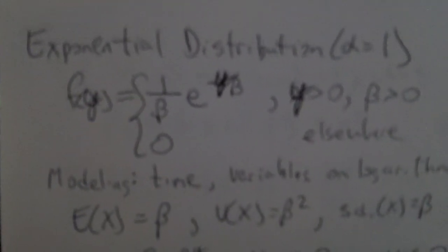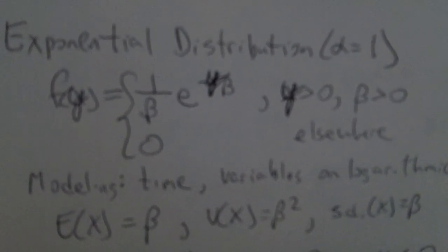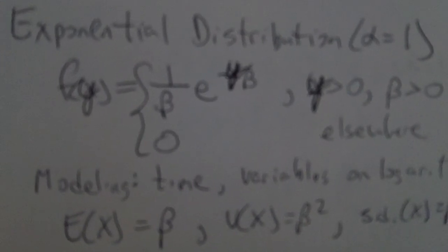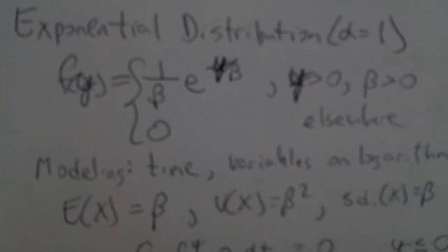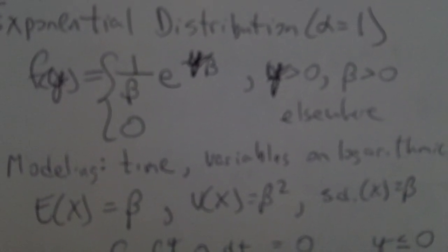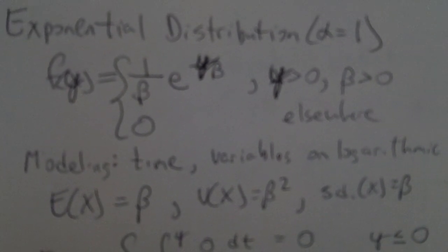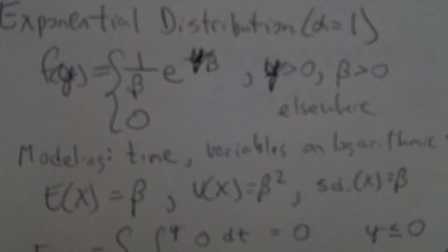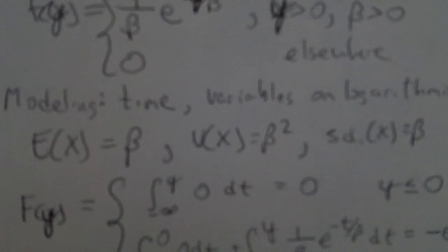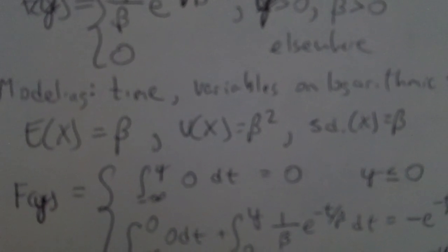The one special case we focus on is the exponential distribution, which occurs when alpha equals 1 in the gamma. The density reduces to (1/beta) · e^(-y/beta) — an actual exponential function, hence the name. Since the exponential is just a special case of a gamma, plugging alpha = 1 into the general formulas gives mean = beta, variance = beta², and standard deviation = beta. This is the only random variable for which the mean and standard deviation are always equal to each other.